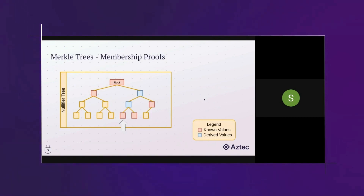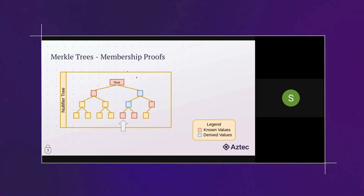A great property of Merkle trees is that we can do a membership proof — I can prove a piece of data exists in the tree without running through every single node. I provide a hash path. To get to the root, I take the hash of adjacent values going up. When providing a proof, you only have to supply the sibling nodes because you can derive the intermediate data. To do a membership proof, you hash these values together going up and end up with your root.